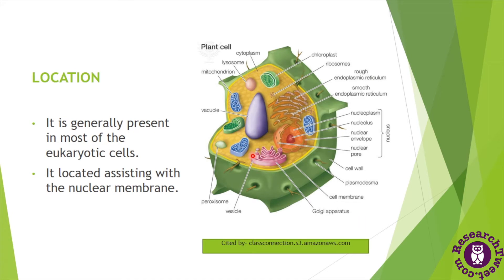The endoplasmic reticulum is generally present in most eukaryotic cells and located adjoining the nuclear membrane. In this diagram we can see the anatomy of a plant cell indicating all its cellular organelles. In the core of the cell we can see the nucleus with its nuclear envelope and nuclear membrane. The nucleus is a double-membrane organelle, and the outer membrane of the nucleus is adjoining the membrane of the endoplasmic reticulum. We can see two types of endoplasmic reticulum: rough ER and smooth ER.